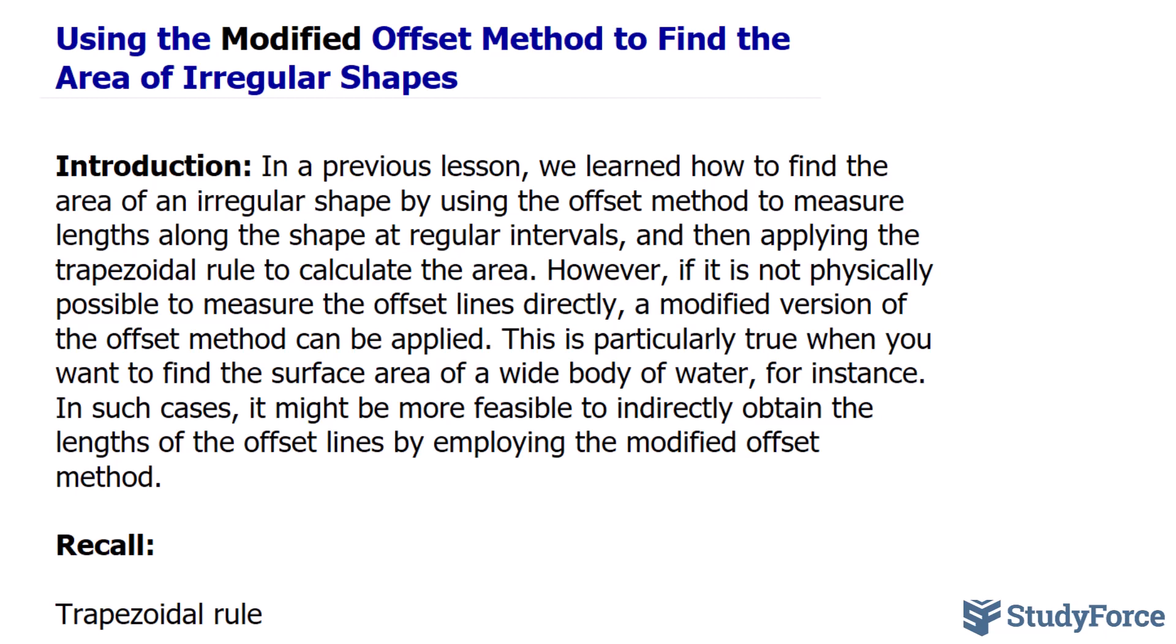In a previous lesson, we learned how to find the area of an irregular shape by using the offset method to measure lengths along the shape at regular intervals and then applying the trapezoidal rule to calculate the area. However, if it is not physically possible to measure the offset lines directly, a modified version of the offset method can be applied.